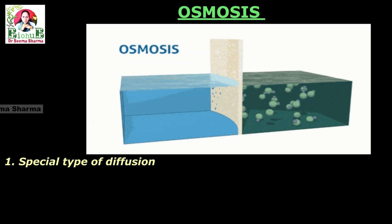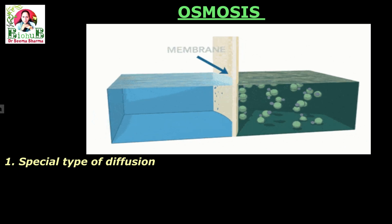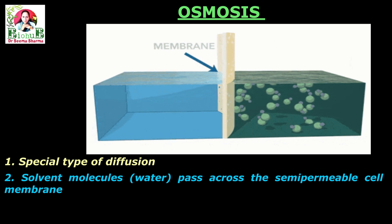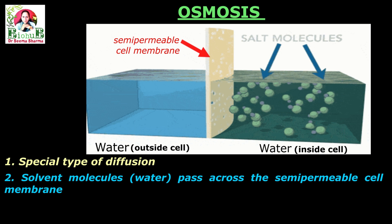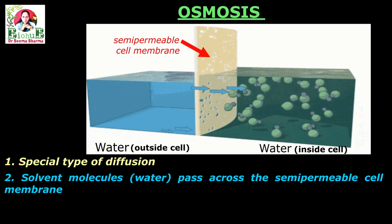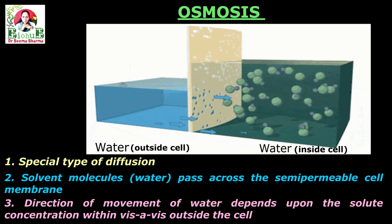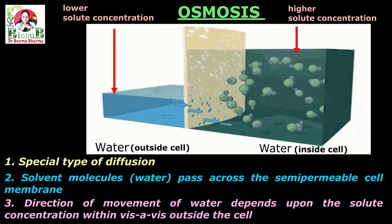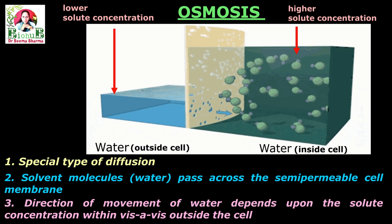Osmosis is a special type of diffusion. During this process, solvent molecules — basically water — pass across the semi-permeable cell membrane from one cell to another. This movement of solvent molecules depends upon the solute concentration inside and outside the cell, or between the two cells.